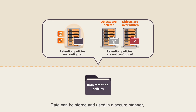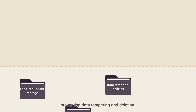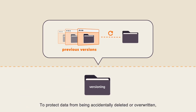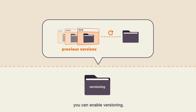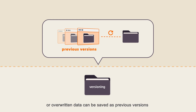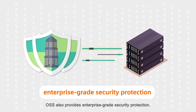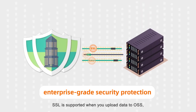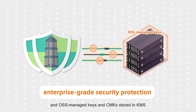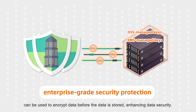You can configure data retention policies for compliance purposes. Data can be stored and used in a secure manner, preventing data tampering and deletion. To protect data from being accidentally deleted or overwritten, you can enable versioning. All accidentally deleted or overwritten data can be saved as previous versions and can be recovered anytime. OSS also provides enterprise-grade security protection. SSL is supported when you upload data to OSS, and OSS managed keys and CMK as stored in KMS can be used to encrypt data before the data is stored, enhancing data security.